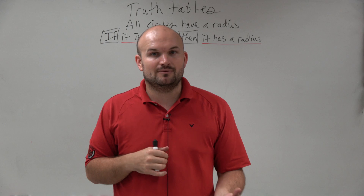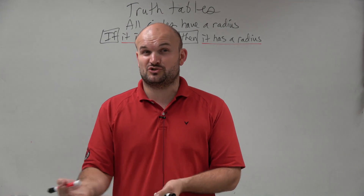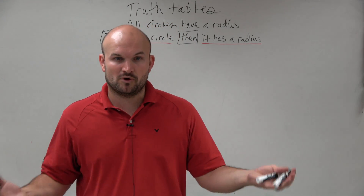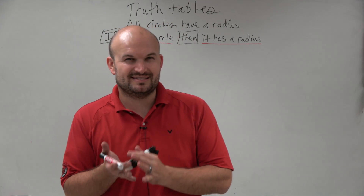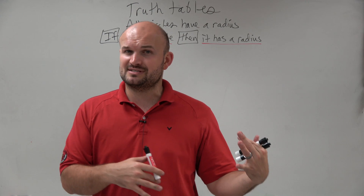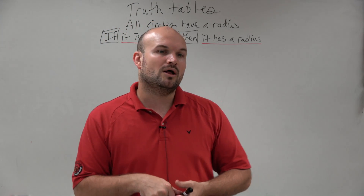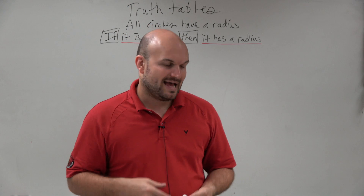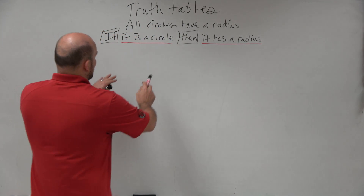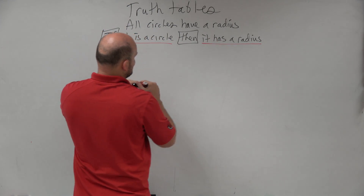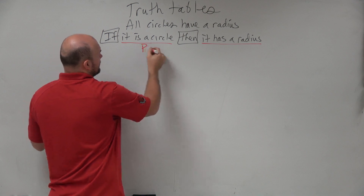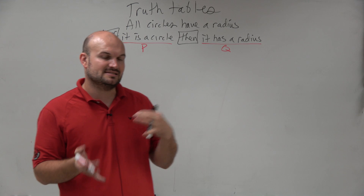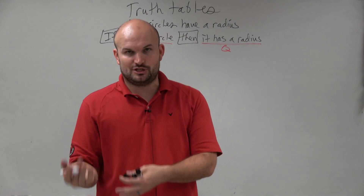We determined the truth of a statement based on whether we had a counterexample or not. If everything fit and worked, we said it was true. But if we could prove a counterexample, then we could show it's false. By using truth tables, we can make this much quicker. We label our hypothesis as p and our conclusion as q.